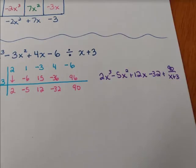So let's write out the answer. 2x³ - 5x² + 12x - 32 plus a remainder of 90 out of an x + 3. So now that we know this answer, let's look at how we could have used a box to get to this.